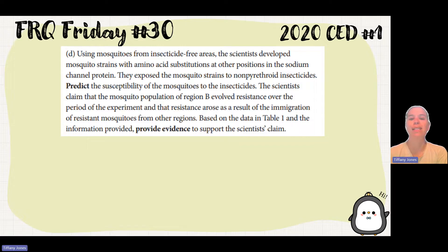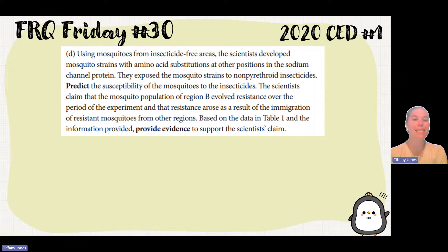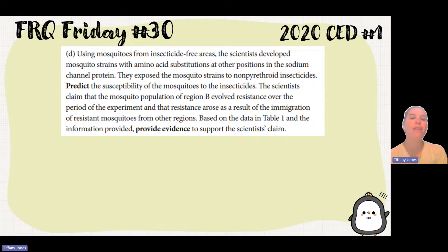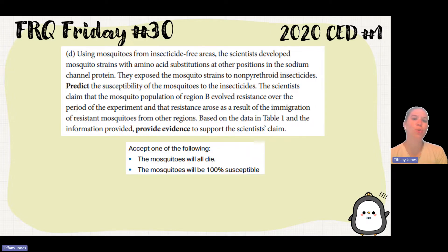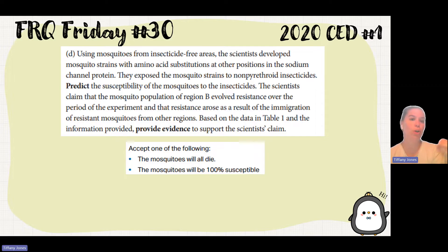Part D: scientists developed mosquito strains with amino acid substitutions at different positions in the sodium channel, then exposed them to the insecticides. If the mutation is at a different position — not at position 1014 — then those mosquitoes will be susceptible to the insecticide and all of them will die. It was only at this one specific position that the mutation caused the change in amino acid substitution conferring resistance.